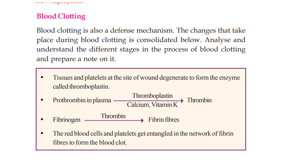Blood clotting is also a defense mechanism. Tissues and platelets at the site of a wound generate an enzyme called thromboplastin. Thromboplastin converts prothrombin in the plasma, with the help of calcium and vitamin K, into thrombin.